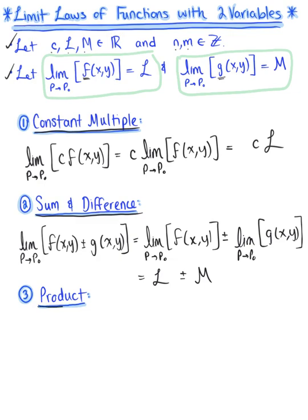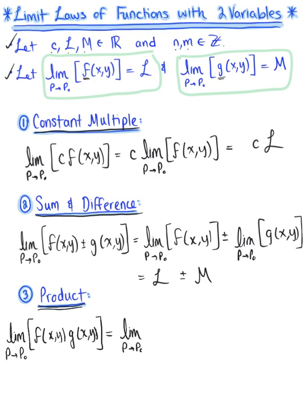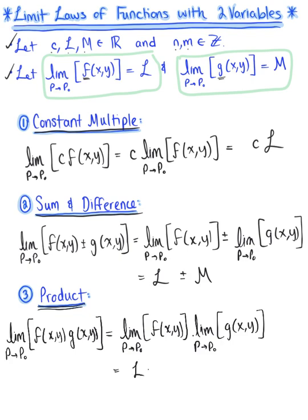Our next rule is the product rule. If we have the limit as p approaches p₀ of the product f(x, y) multiplied by g(x, y), because both limits exist, we can separate this into two separate limits being multiplied together: the limit of f(x, y) times the limit of g(x, y) as p approaches p₀. This equals L multiplied by M.